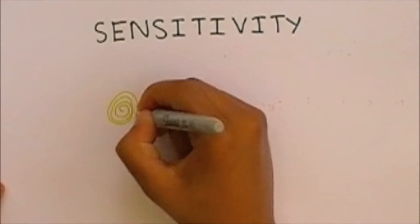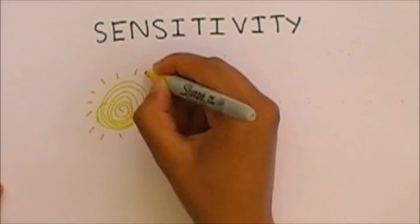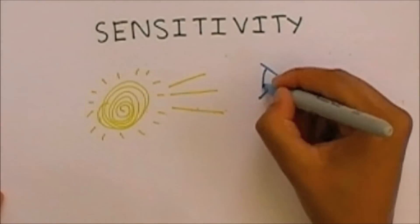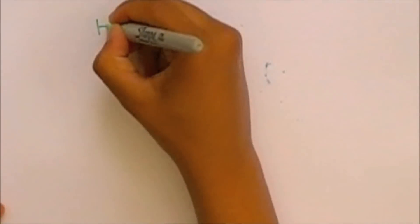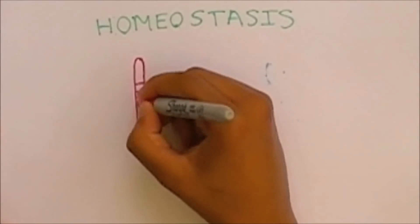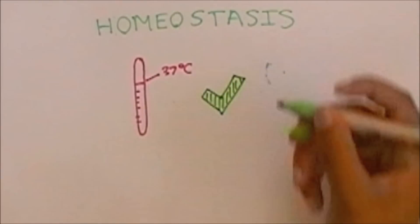Sensitivity is the response to a stimulus. A stimulus is the changing surroundings of an organism such as the effect that changing light has on the eye. Homeostasis is the maintenance of a constant internal environment such as body temperature.